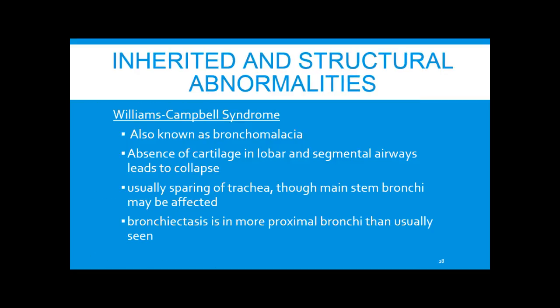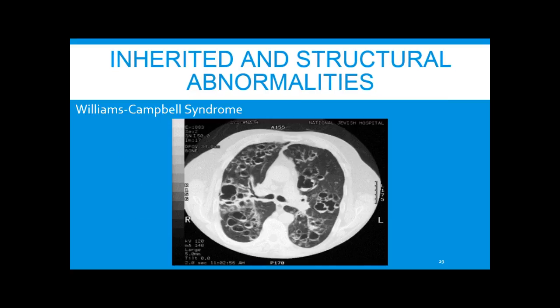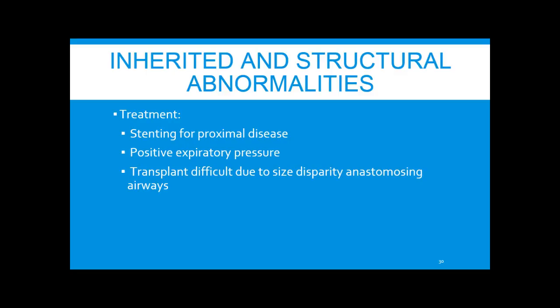Williams-Campbell syndrome, or bronchomalacia, is the absence of cartilage in lobar and segmental regions, leading to collapse — the trachea is usually spared. On imaging you see a normal main stem with cystic airways in the periphery. Knowing these diagnoses can be helpful: you can stent if there's proximal disease, or apply positive expiratory pressure. Unfortunately transplant is often difficult due to size disparities at the area of anastomosis.